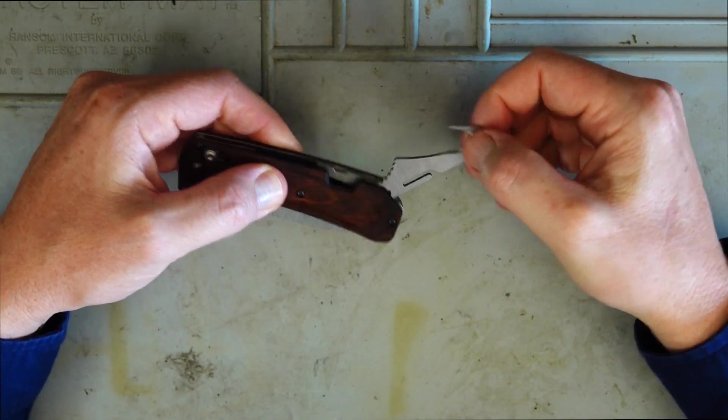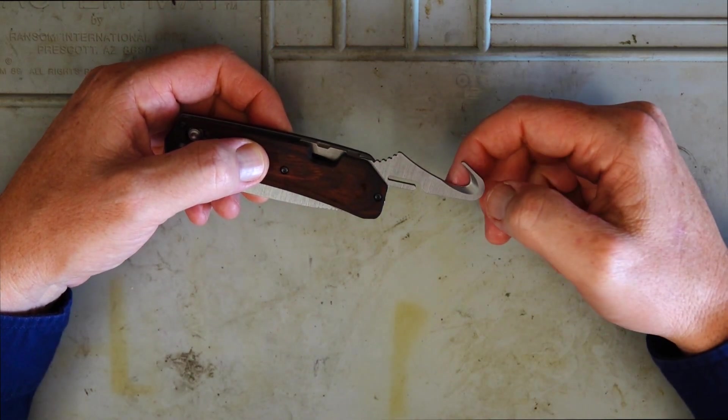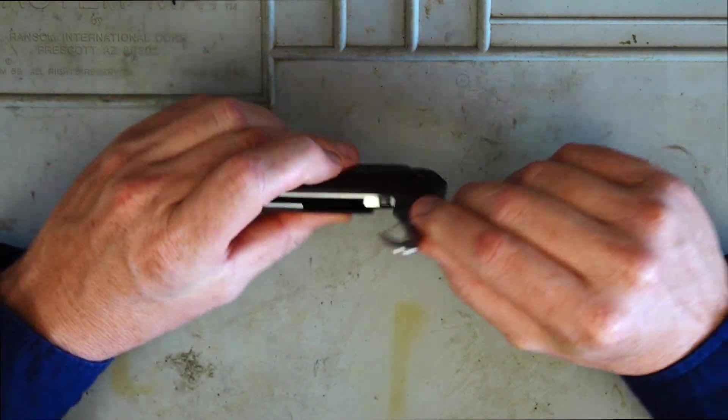Now at the rear here we've also got a gut hook. It's made out of 440c stainless steel, obviously very sharp and it works a treat.